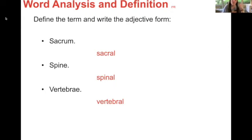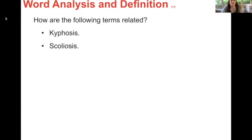Sacrum, spine, vertebrae — you are supposed to define the term and write the adjective form. How are the following terms related? The first one is a normal posterior curve of the spine that can be exaggerated in disease. Scoliosis is an abnormal lateral curvature of the spinal column. Both tend to be in the thoracic region. The first can be a little more pronounced with disease, but scoliosis is abnormal and can cause curvature in a different direction.